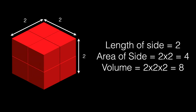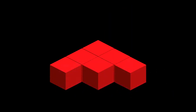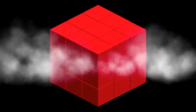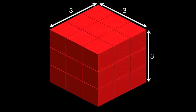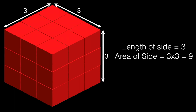Now let's build a triple-sized cube out of one-unit cubes. The bottom layer takes nine little cubes, three by three, and we need two more layers just like the first. We now have a cube with length, width, and height of three units each. The area of each side is three by three, or nine square units, and the volume is three by three by three, or 27 units in volume. The size tripled, the surface area got bigger by a factor of nine — three squared — and the volume increased by a factor of 27 — three cubed. Notice that the volume is still growing faster than the surface area.